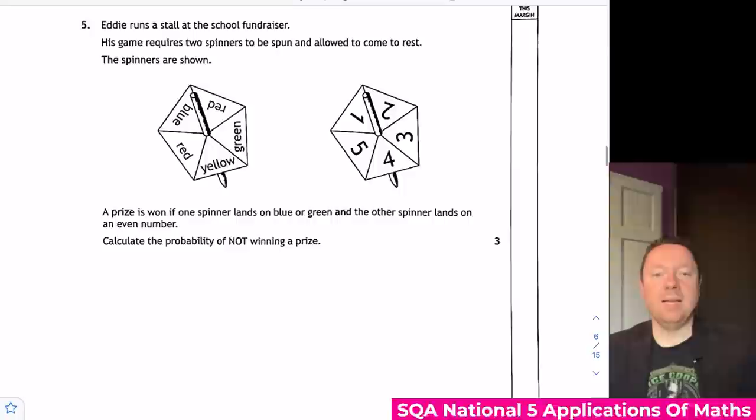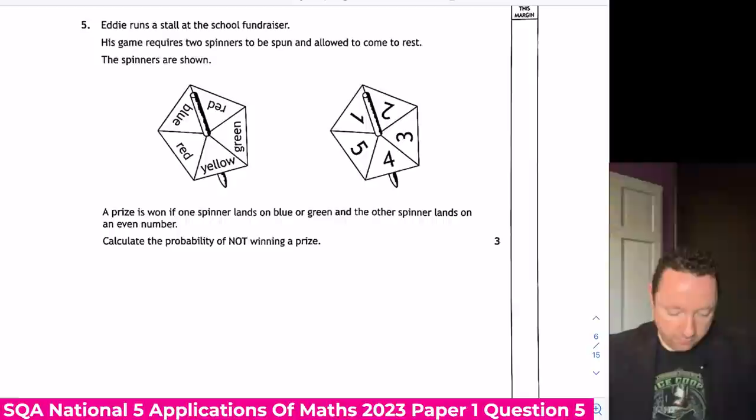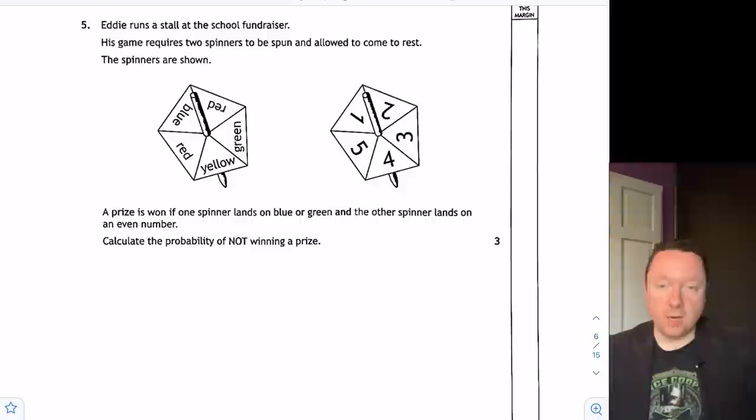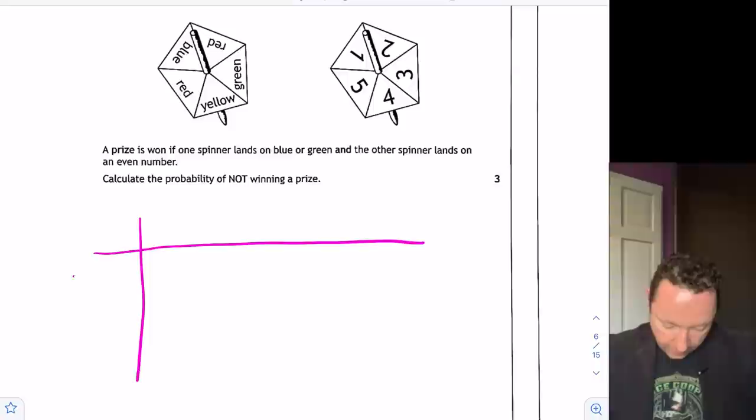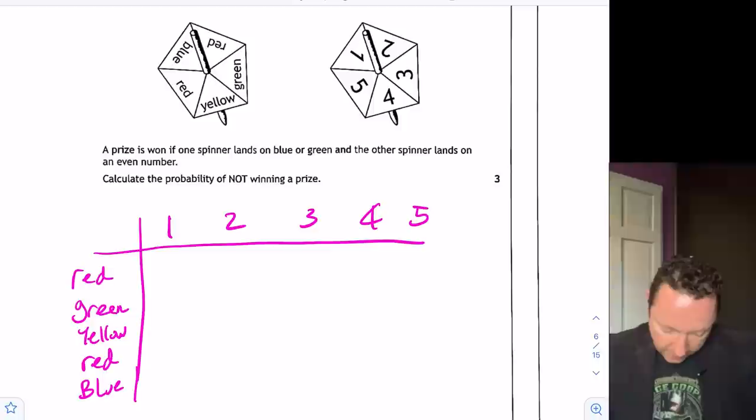National 5 Applications of Maths 2023 Paper 1 Question 5. Eddie runs a stall at a school fundraiser. The game requires two spinners to be spun and allowed to come to rest. The spinners are shown. One spinner which is colours and one is numbers. A prize is won if one spinner lands on blue or green and the other spinner lands on an even number. Calculate the probability of not winning a prize. There's lots of ways to do this, but one of the standard ways is to work out all the probabilities with a sample space diagram, or you might just know it as a table. So on one side I'm going to write red, green, yellow, red again, and then we've got blue. That's all options for the first spinner. And the second spinner goes one, two, three, four, five.